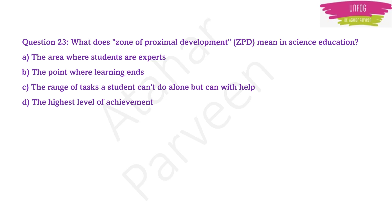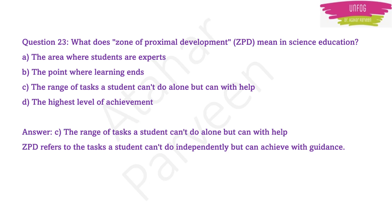Next question: what does Zone of Proximal Development (ZPD) mean in science education? It refers to the range of tasks a student cannot do alone but can do with help — from other students or from the teacher. ZPD actually refers to tasks a student cannot do independently but can achieve with guidance, mostly from the teacher. This is an important expected question — at minimum, know the full form: Zone of Proximal Development.